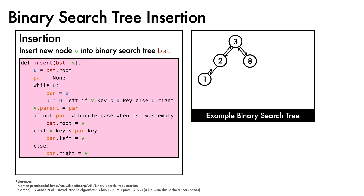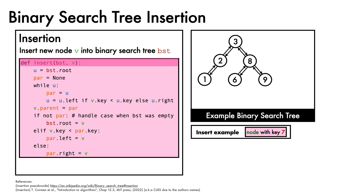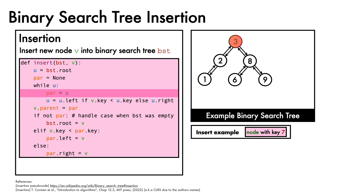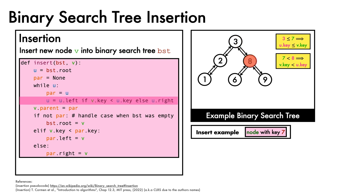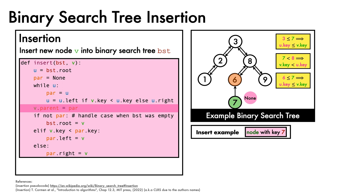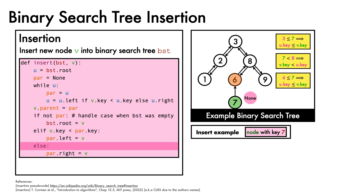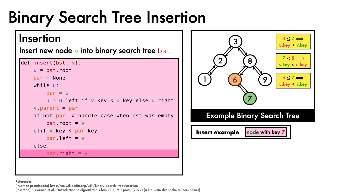We'll illustrate the algorithm on a simple binary search tree. We'll suppose that the node to be inserted is a node with a key of 7. When calling the function, we first assign u to root, and initialize par to be none. Then, since u is not none, we update par to u, and since v's key 7 is greater than or equal to u's key of 3, we move u to its right child. We head further down the tree, first checking that u is not none, updating par to u, and this time, since v's key is less than u's key 8, we update u to its left child. We again check u is not none, update par to u, check v's key against u's, and move u to its right child, which is none. Since u is now none, we break out of the while loop and attach v to par via its parent attribute. We check the edge case to ensure that the tree was not empty, check if v's key is less than par's key — which it isn't — so we reach the else statement, and attach v as par's right child.